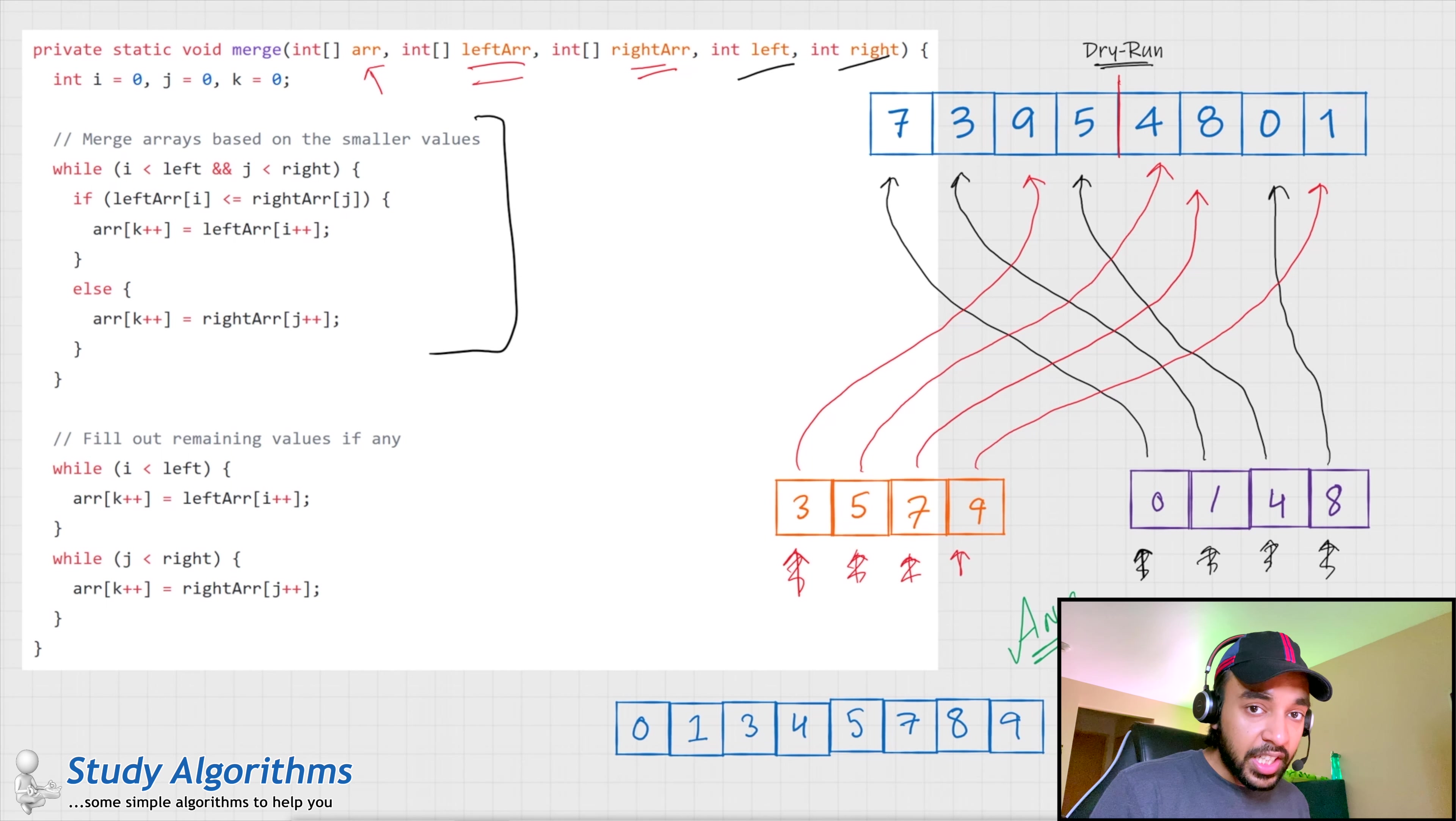The time complexity of merge sort algorithm comes out to be a total of order of n log n. That is because you take n amount of time to scan through the entire array and at each step you are dividing the array into two parts. So, you are doing log n amount of steps. And, hence this is your total time complexity.